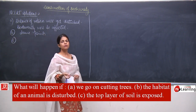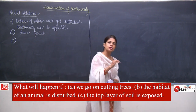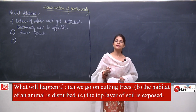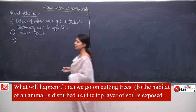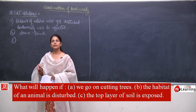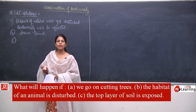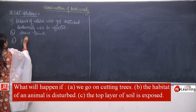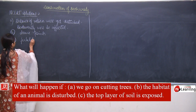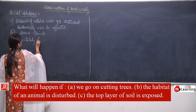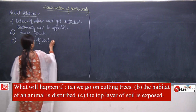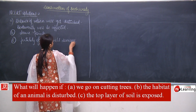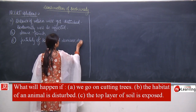Part C: if the top layer of soil is exposed, the soil will get washed away by wind or rain and desertification will take place. That area will get converted — a rocky layer will come out and the fertility of soil will decrease. This leads to desertification.